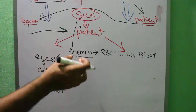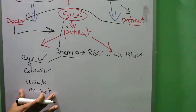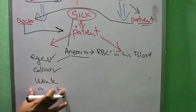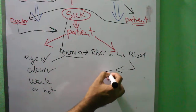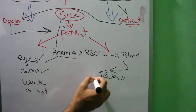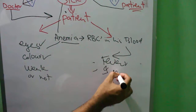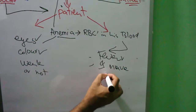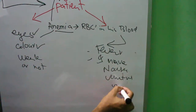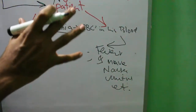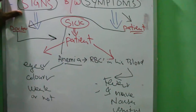Now, what does the patient say? These were the signs that the doctor observed. Now for symptoms — the patient comes and says, 'I have fever, I have nausea, vomiting,' and so on. These are the symptoms — what the patient tells the doctor.